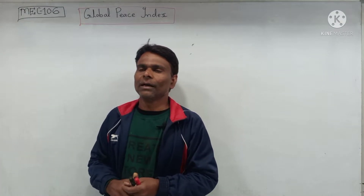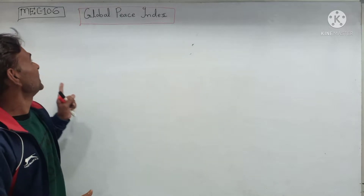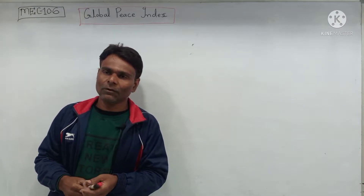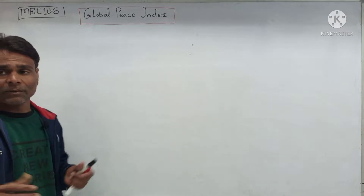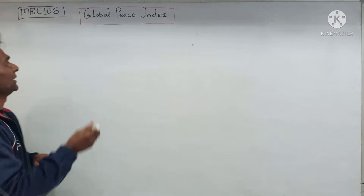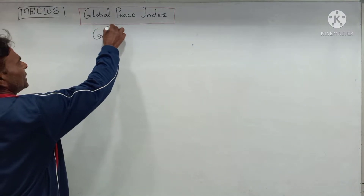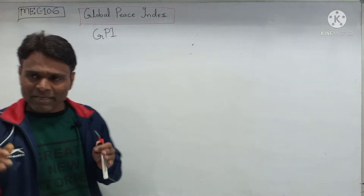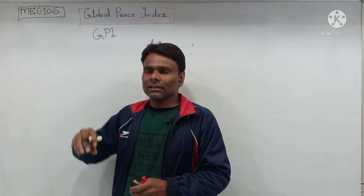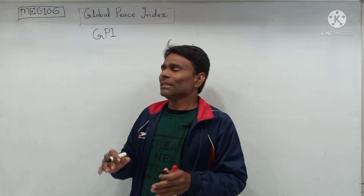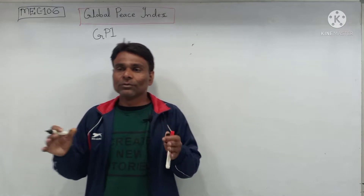In this video I will discuss the Global Peace Index for course code ABC 106, titled Public Economics. The Global Peace Index, short form GPI, measures the relative position of a nation's peacefulness — that is, the extent to which a country is peaceful.